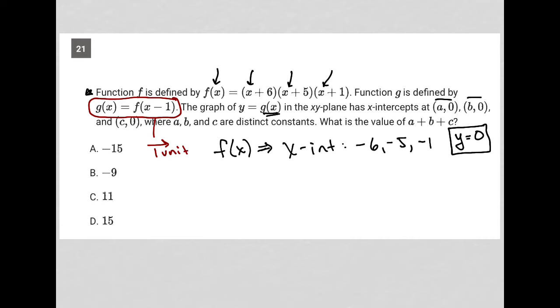It shifts everything to the right 1 unit, which means my g(x) x-intercepts should be the same as my f(x) x-intercepts, but shifted to the right 1 unit.